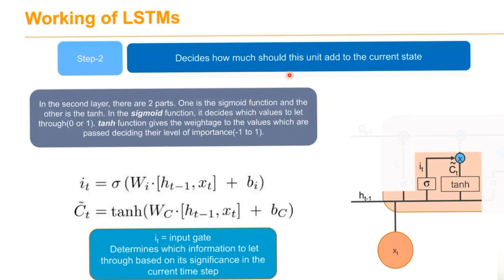In step 2, it decides how much this unit should add to the current state. Next, we use the tanh function. In the second layer, there are two parts: one is the sigmoid function and the other is tanh. The sigmoid function decides which value to let through, decided by 0 or 1.